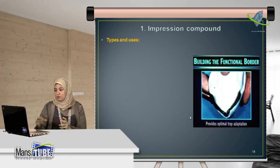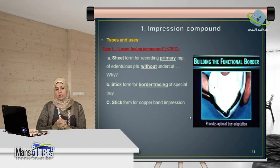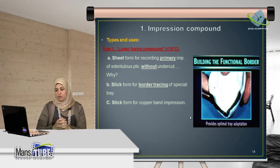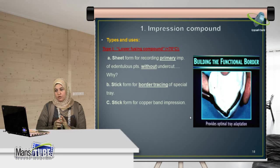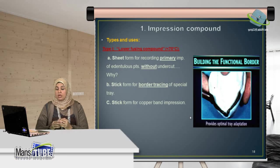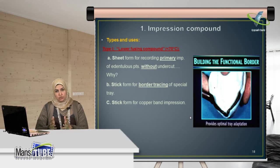Type 1 impression compound is called lower fusing compound and has a fusing temperature below 70 degrees Celsius. It has three forms and uses. The sheet form is used for taking a primary impression for edentulous patients without undercut. It is used for primary impression because the material has low flow and will not record fine details. It is used for edentulous patients without undercut because this material is rigid after setting, so it cannot be used with any undercut.